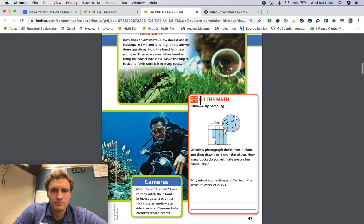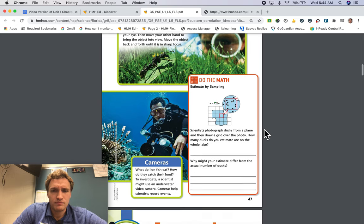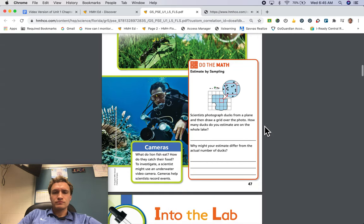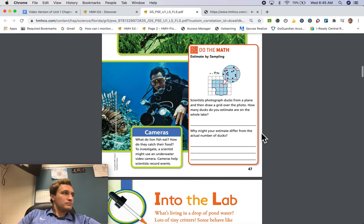Do the math. Estimate by sampling. Scientists photograph ducks from a plane and then draw a grid over the photo. How many ducks do you estimate are on the whole lake? Why might your estimate differ from the actual number of ducks?